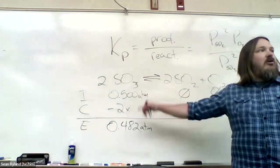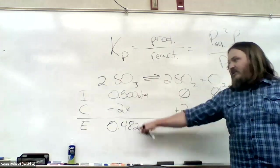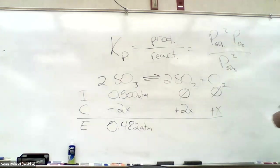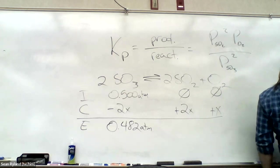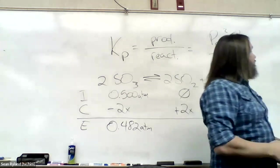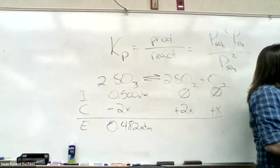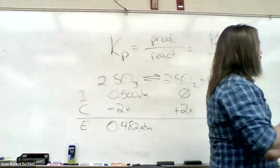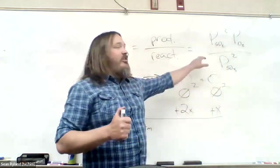Remember, as soon as we get a single column all the way filled in, we can just say that this is an algebraic equation. We can just say 0.500 ATM minus 2x equals 0.482 ATM. That's pretty easy to solve for X. So that's going to be 0.009.